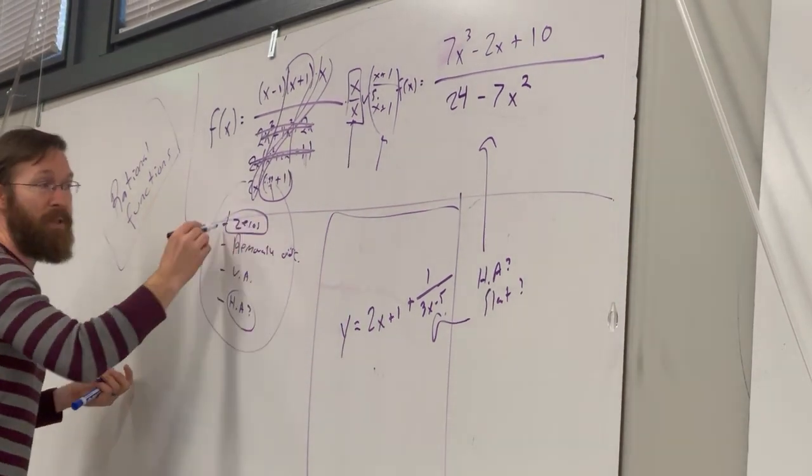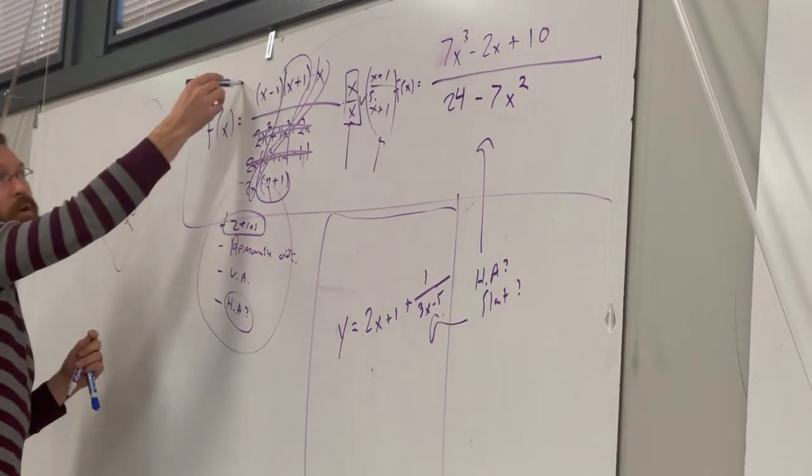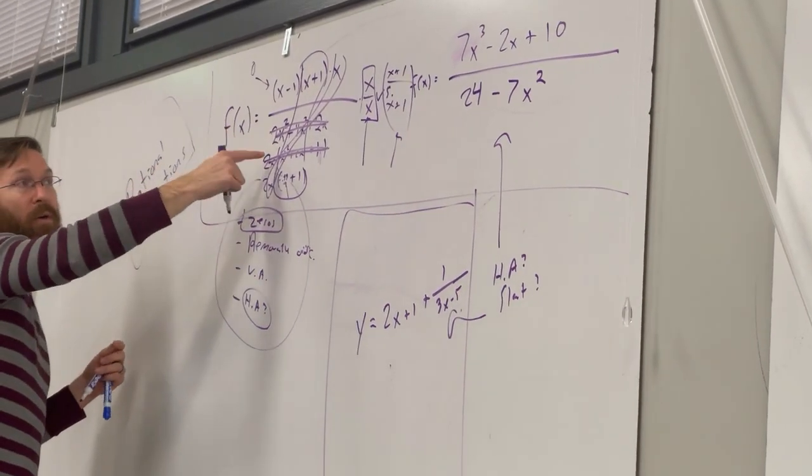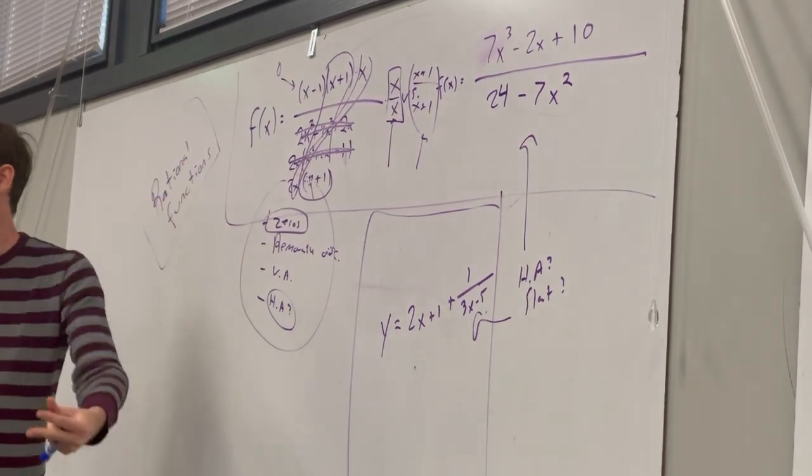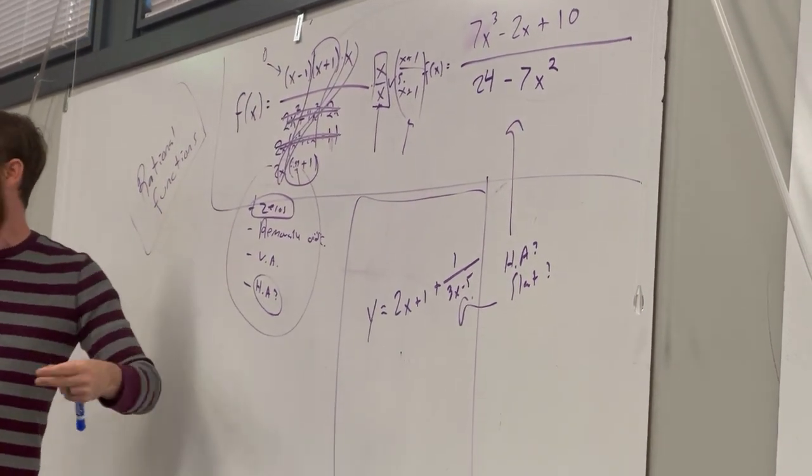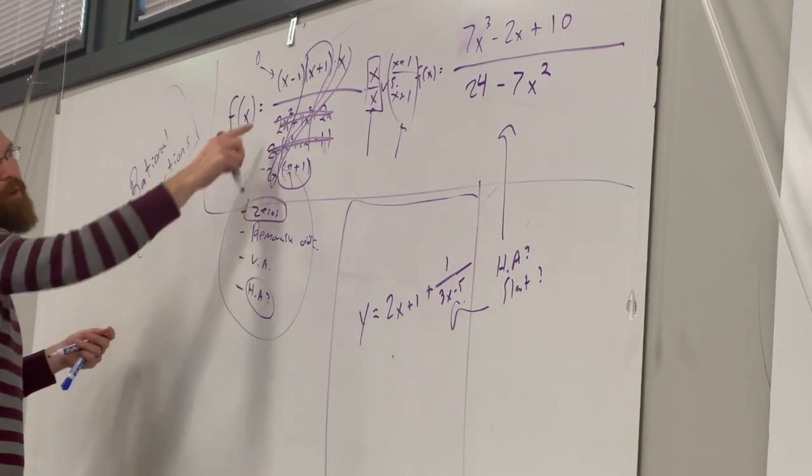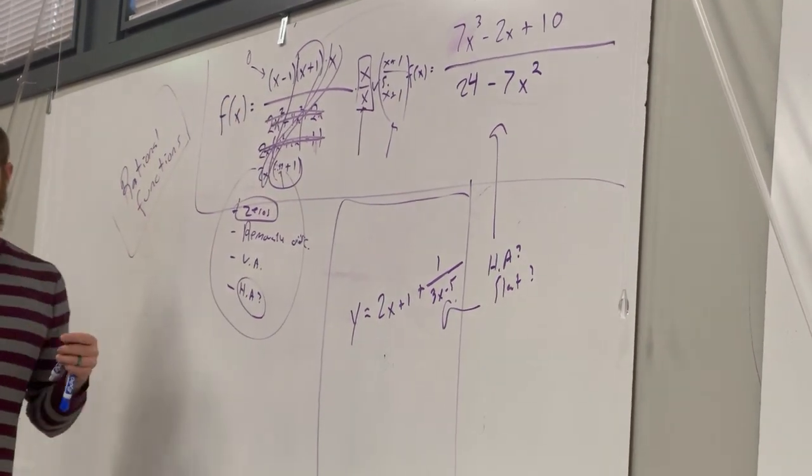And then zeros, you're going to get whenever you have a numerator that's 0 and a denominator that is not 0. Because 0 divided by any non-zero number is just 0. So that would be at x equals 1. Pause.